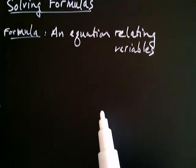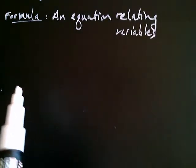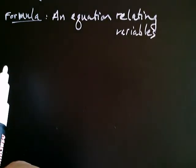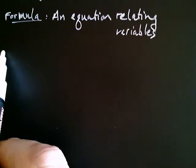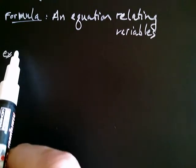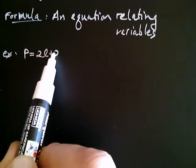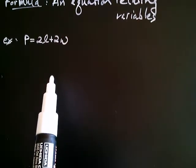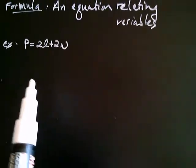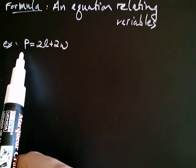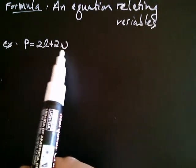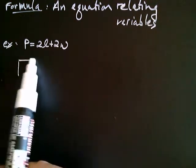Okay, so let's give some examples of some formulas that you may know. So have you ever seen this formula before? P is equal to 2L plus 2W. That's a formula that gives you the perimeter of a rectangle in terms of the length and the width. So the perimeter, remember, is the distance all the way around a rectangle that you'd have to walk.